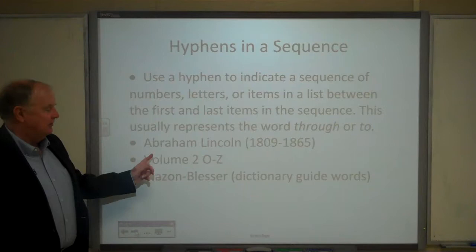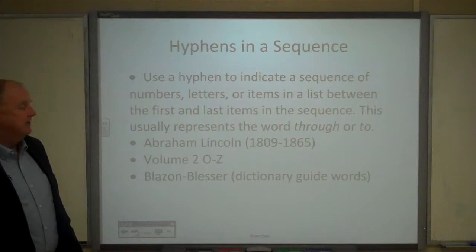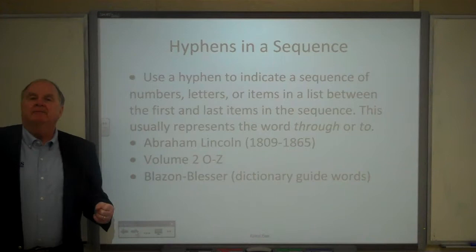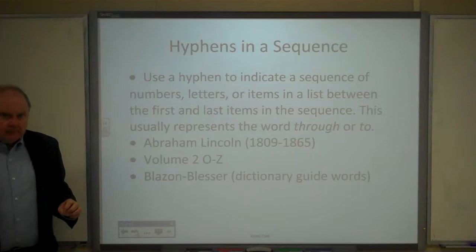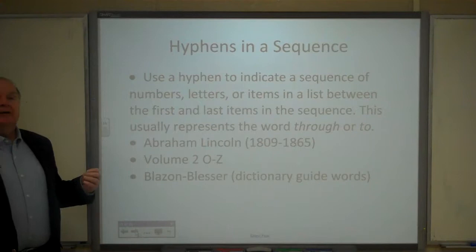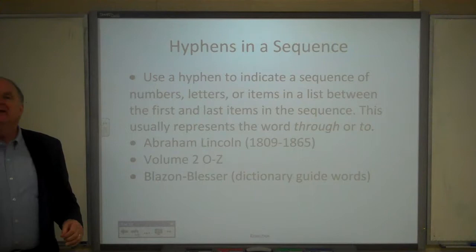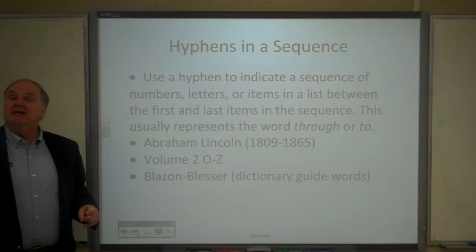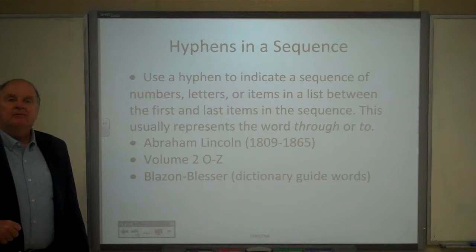Dictionary guide words at the top of a dictionary page use this — for example, blazing to blessing — again with the hyphen indicating the sequence. By the way, when Frank L. Baum was writing his fantasy story, he was trying to come up with a name for his fantasy land, and he happened to be working in an office where one of the drawers on a file cabinet was labeled O through Z. He looked at that and said, 'That's a great name for my fantasy land' — Oz.